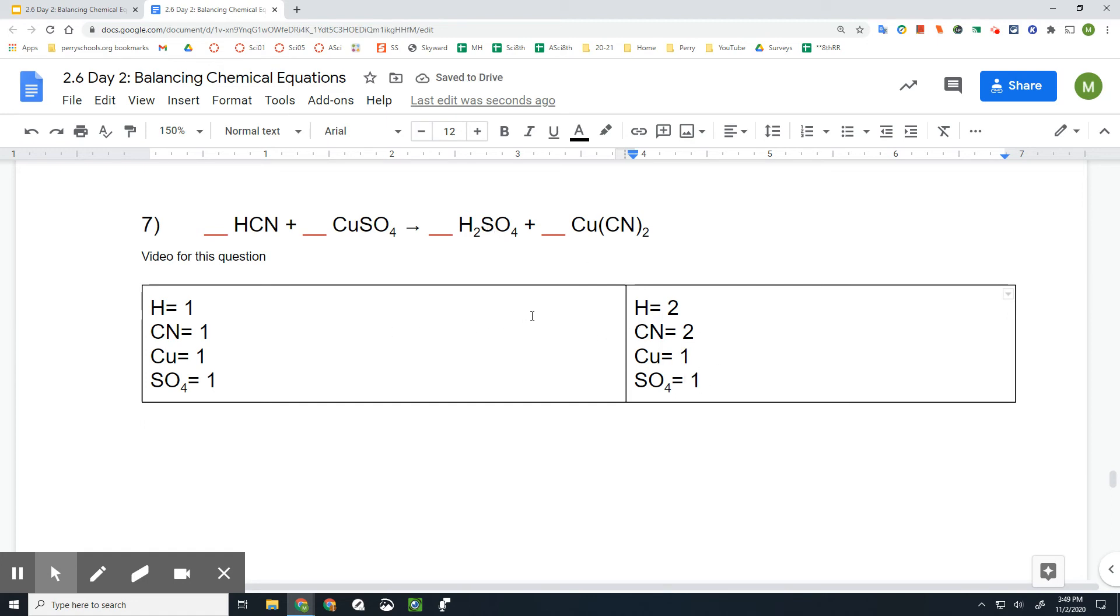Now the only thing that needs to be balanced on this side are H and the CN, because there's two H and two CN over here. So let's start by putting the coefficient of two in front of here, so that'll make this hydrogen times two equal to two. The CN, make that times two, which is also equal to two.